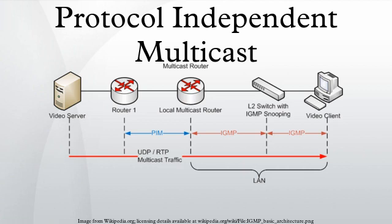If the data rate is high, the RP can send source-specific join-prune messages back towards the source, and the source's data packets will follow the resulting forwarding state and travel unencapsulated to the RP. Whether they arrive encapsulated or natively, the RP forwards the source's decapsulated data packets down the RP-centered distribution tree toward group members. If the data rate warrants it, routers with local receivers can join a source-specific, shortest path distribution tree, and prune their source's packets off the shared RP-centered tree. For low data rate sources, neither the RP nor last-hop routers need join a source-specific shortest path tree, and data packets can be delivered via the shared RP-tree.